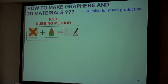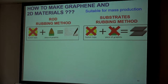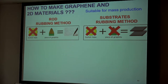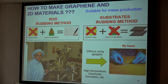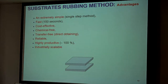How to make graphene? We suggested two methods, and I'm going to speak about the second one: the substrate rubbing method. This allows, instead of using scotch tape and graphite, to just use two substrates and rub them together. We are not using high temperature chemicals, sonication, etc. We can get graphene in 150 seconds to three minutes by hand. We call this technology substrate rubbing, and it is extremely simple — a single-step process, which is very important.